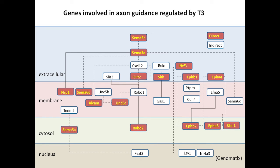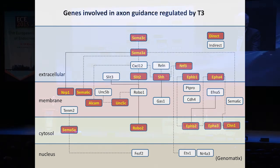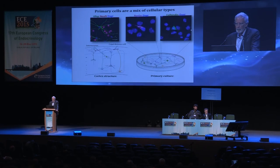For example, one of the processes regulated by thyroid hormone is axon guidance. We found around 30 genes involved in this process. The red ones are directly responsive genes, and the white ones are indirectly regulated genes. There are some very interesting genes, such as SEMA3A, SEMA4D and its receptor NRP1, or the ephrins, which are very interesting targets regulated by thyroid hormone.